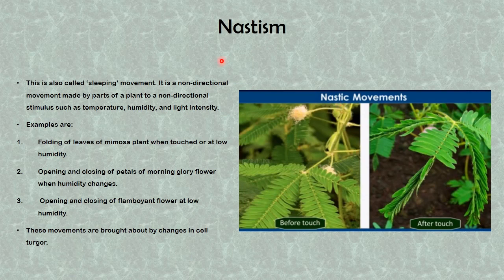Finally, we look at nastic movement, also called sleeping movement. It is a non-directional movement made by parts of a plant in response to a non-directional stimulus such as temperature, humidity, and light intensity. Examples include the folding of leaves of the mimosa plant when touched or at low humidity — as you can see, before being touched the leaves are spread wide, but after touch the leaves come together. Opening and closing of petals of the morning glory flower when humidity changes, and opening and closing of flamboyant plant leaves at low humidity, are also examples. These movements are brought about by changes in cell turgor.